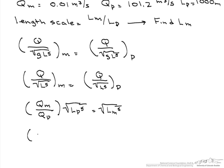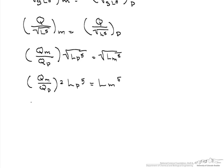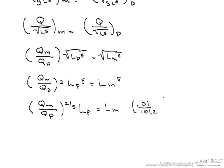Squaring both sides gives us (Q_m / Q_p)² times L_prototype⁵ equals L_model⁵. Solving, L_model equals (Q_m / Q_p)^(2/5) times L_prototype. Substituting 0.01 divided by 101.2, raised to the two-fifths, times 1000 meters, we get the length of the model equals 25 meters.